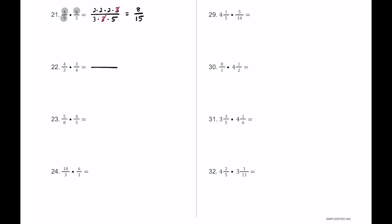For number 22, the 3s are prime and the 4s can be broken down. Each 4 breaks into 2 times 2, and the 3s stay as 3. The 3s cancel, and both pairs of 2s cancel as well. Everything gets crossed out, leaving us with 1 over 1, so the final answer is just 1.